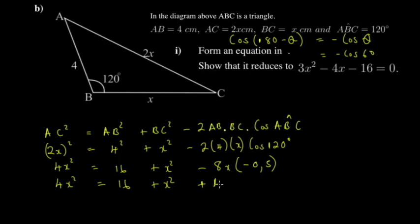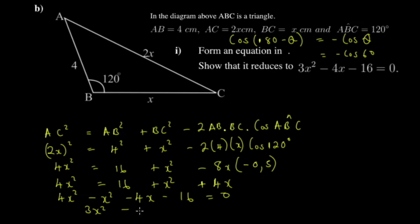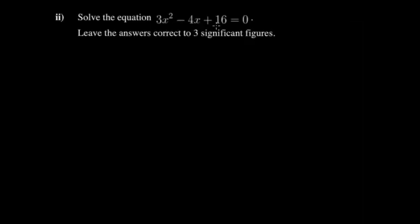So we get +4x on the right side. Transposing everything to the left: 4x² − x² − 4x − 16 = 0, which gives 3x² − 4x − 16 = 0. Note that one term should be negative — we derived this from our working earlier. This is the quadratic equation we need to solve.